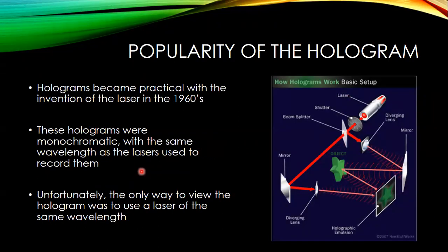The popularity of the hologram exploded in the 1960s with the invention of the laser. These holograms were monochromatic because the laser light was monochromatic. Unfortunately, the only way to view a hologram was to use the original wavelength to illuminate the film. To create the hologram, we would split the beam, shine the laser through a diverging lens onto the object to illuminate it, then combine it with a reference beam on the holographic film. After exposure, we could use the reference beam again to illuminate the film and see the original object as a virtual image.